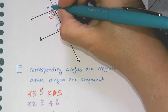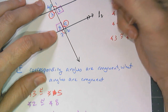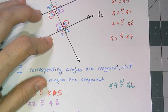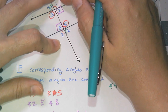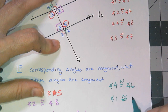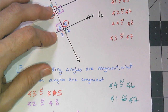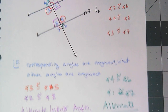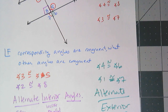Similarly, I can show angle 4 is congruent to angle 6 — since 4 and 8 are corresponding, and 8 and 6 are vertical. And angle 1 is congruent to angle 7 — since 1 and 5 are corresponding, and 5 and 7 are vertical. We call these alternate exterior angles: alternate because they're on either side of the transversal, exterior because they are outside of the parallel lines.